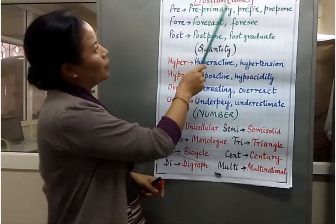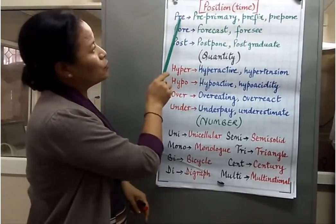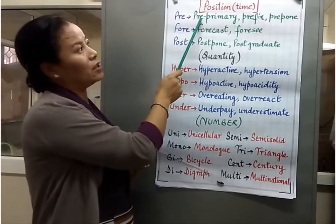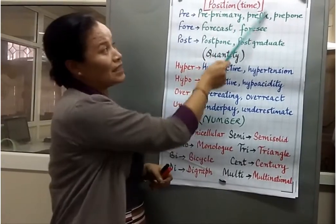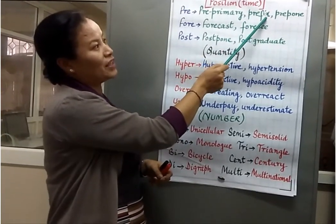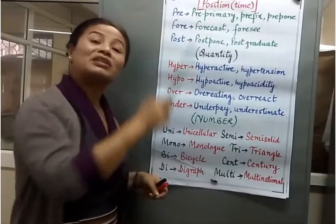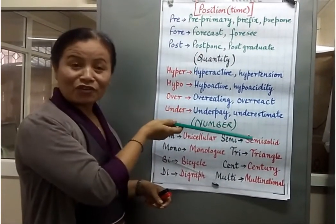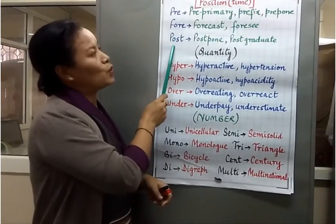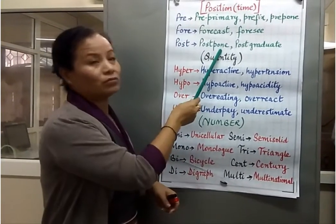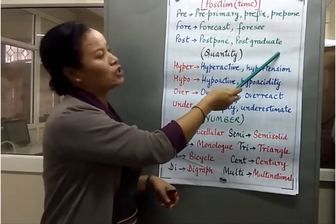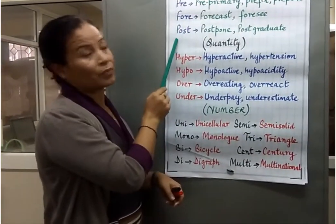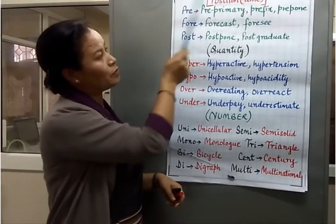This is a prefix of position relating to time. 'Pre' means before — pre-primary means the level before primary. Prefix itself means fixing before. So we have 'prefix,' 'prepone' — a meeting is preponed. Then 'fore': forecast, as in weather forecast. And 'post' means after: postpone — the meeting is postponed — and 'postgraduate.' So pre, fore, and post are examples of prefixes of time.